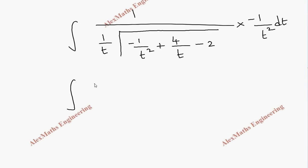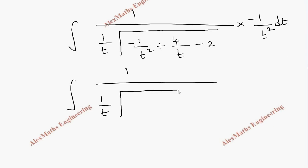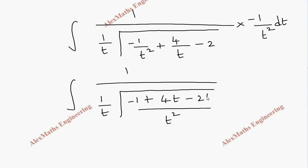Now taking LCM t² inside the square root, the numerator becomes −1 + 4t − 2t², giving √((−2t² + 4t − 1)/t²), all multiplied by −(1/t²)dt.